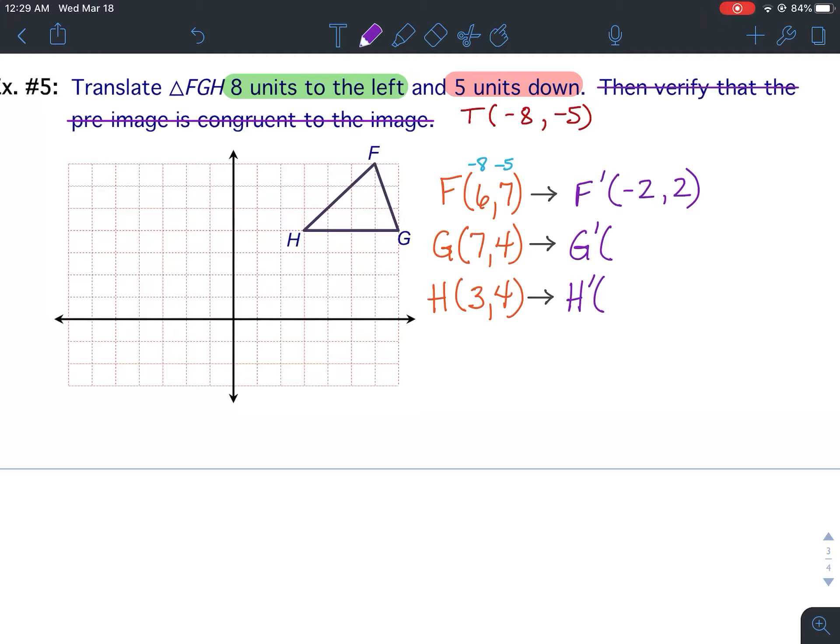For G prime, seven minus eight would be negative one. Four minus five would also be negative one. For H, three minus eight would be negative five. Four minus five is negative one.